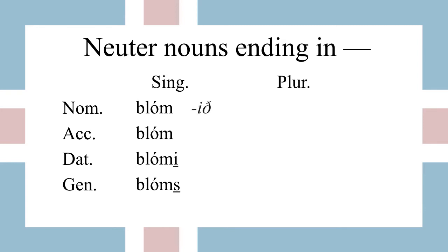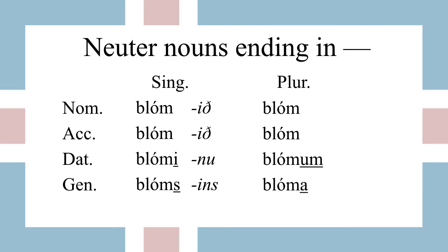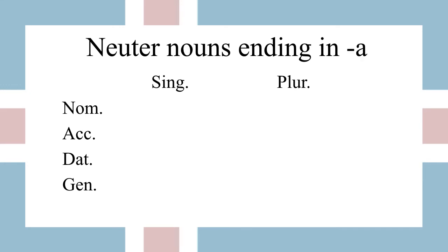Now with the definite article endings — so 'the flower' — we have blómið, accusative blómið, dative blóminu, and genitive blómsins. Now the plural is the same as the singular for words like this: blóm, accusative blóm, dative blómum, and genitive blóma. Also note here how the nominative and accusative again are the same. Then with the definite article we have blómin, blómin, blóminum, and blómanna. This pattern holds true for most neuter words.